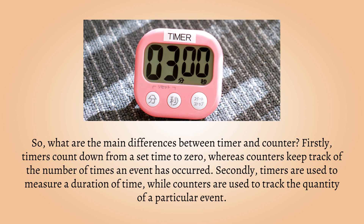So, what are the main differences between timer and counter? Firstly, timers count down from a set time to zero, whereas counters keep track of the number of times an event has occurred. Secondly, timers are used to measure a duration of time, while counters are used to track the quantity of a particular event.